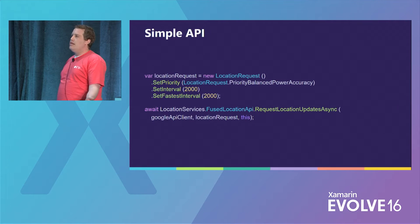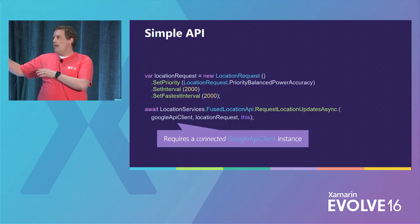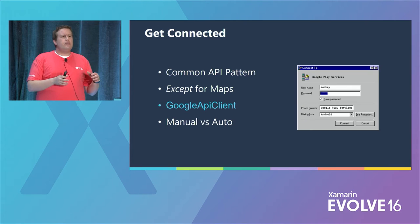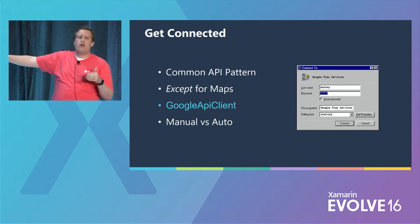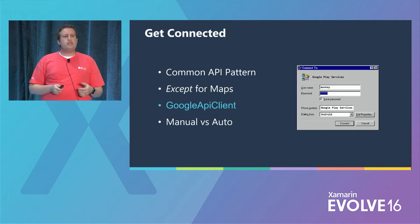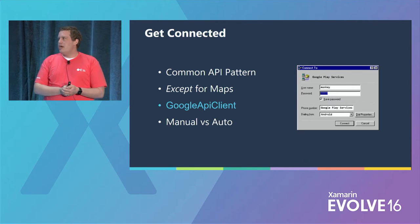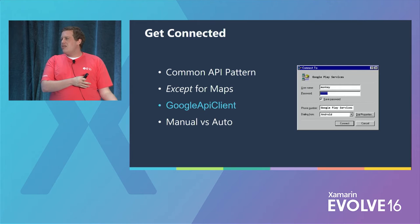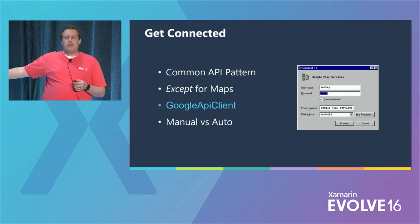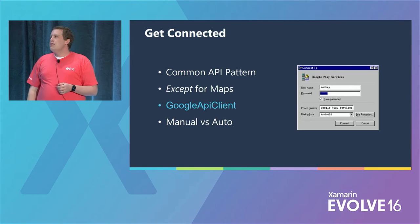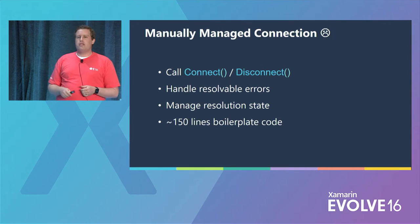There are basically two things you have to do to get locations. First, let's focus on this Google API client. We need this Google API client instance — it's our way of connecting into the Google Play Services APK. It's a really common pattern in Google Play Services and you're going to see it over and over again, except for Maps. Maps existed a long time before some of the other APIs and sort of does its own thing, so we're not going to talk about Maps today.